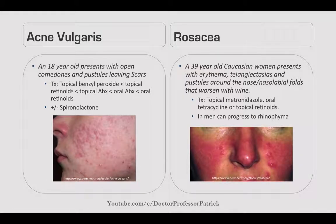Acne vulgaris: an 18-year-old presents with open comedones and pustules that leave scars. Treatment is step-up therapy: first topical benzoyl peroxide (watch for bleaching of clothes), then topical retinoids (now OTC), then topical antibiotics, oral antibiotics, and finally oral retinoids (Accutane) as the last step. Consider spironolactone in hormonally affected patients.